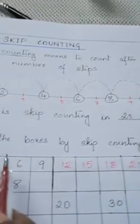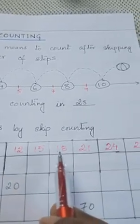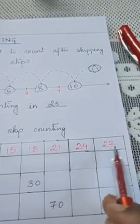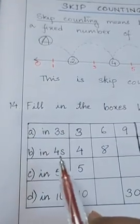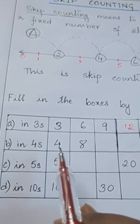So this was your skip counting in 3s. That means you are counting 3 numbers. Now after that, skip counting in 4s. The first one is written here. That is 4.